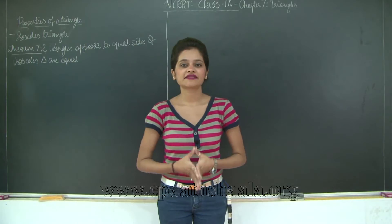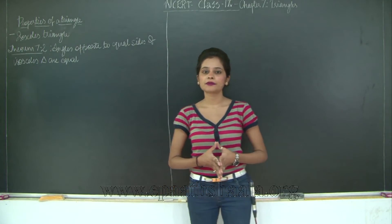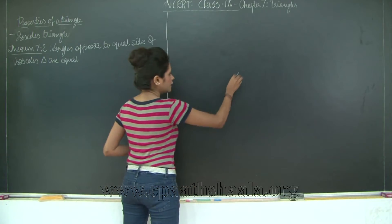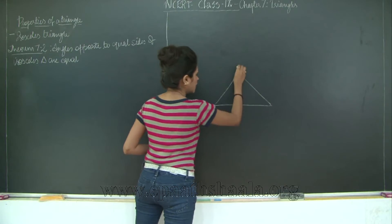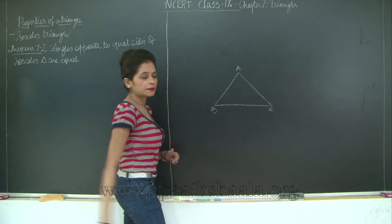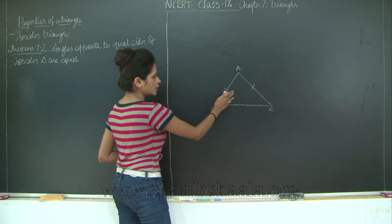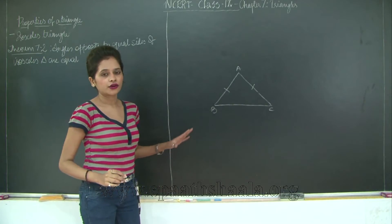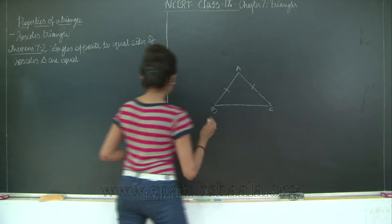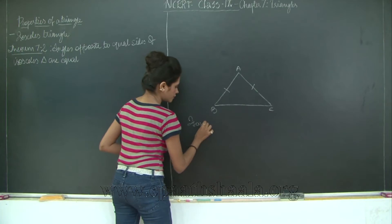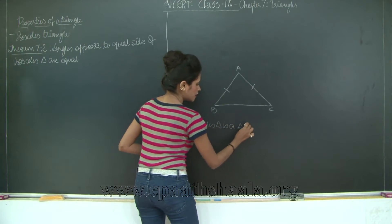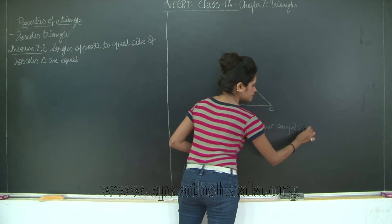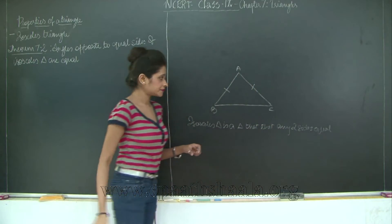Hello students, welcome back. Let us continue with Chapter 7 - Triangles. In today's class we will learn some important properties of triangles, starting with that of the isosceles triangle. So what do we know about isosceles triangles? If I have a triangle ABC, when will it be isosceles? When any two sides are equal - AB equal to AC, or AB equal to BC, or BC equal to AC. Any two sides that are equal makes the triangle isosceles.